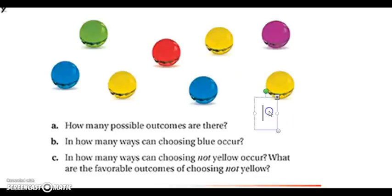Okay, so for A, the total possible outcomes is eight. There are eight marbles. How many ways can choosing blue occur? Well, I look, my event is choosing blue. There are two blue marbles, so there are two ways choosing blue can occur.